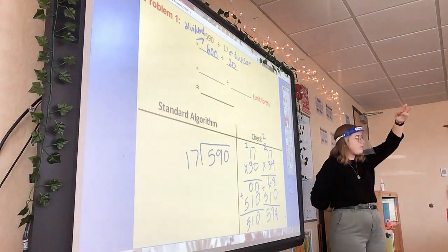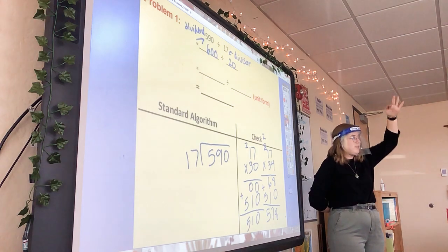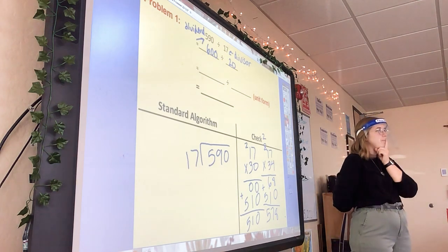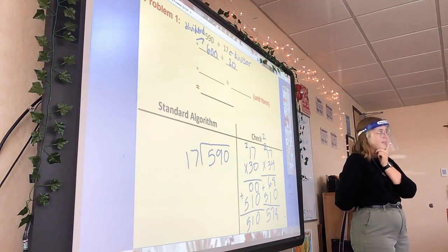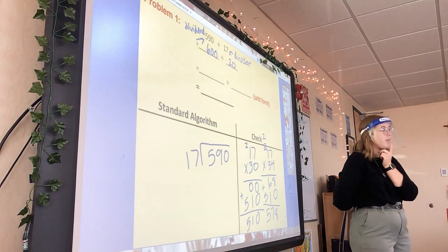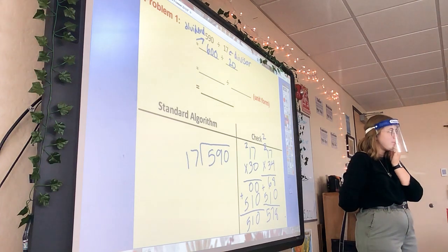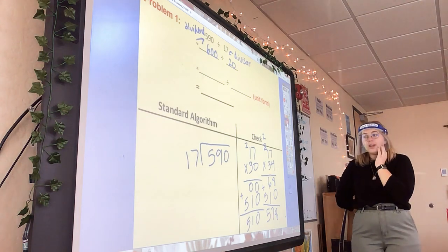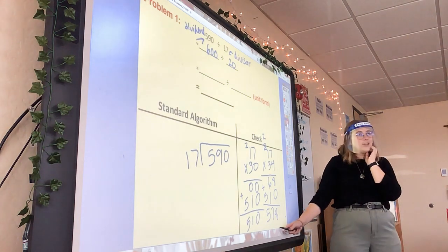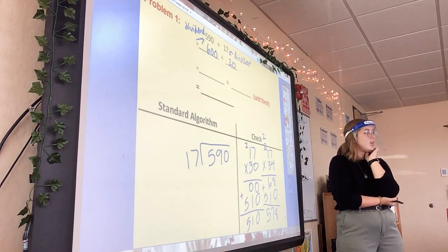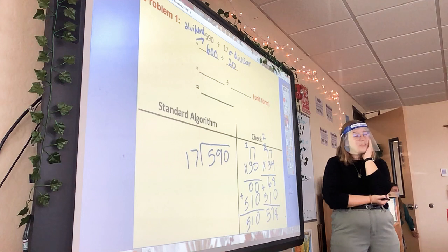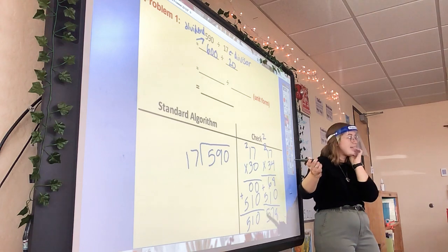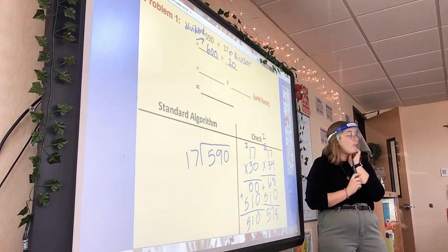From 578 to 590 — how many more would you need to add to 578 to get to 590? 12. So can I squeeze another 17 in there? No. So 17 goes into 590 how many times? 34 times.